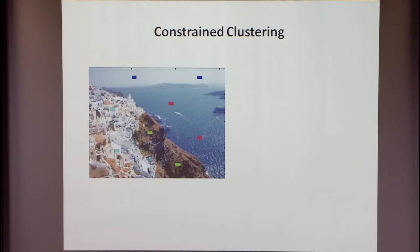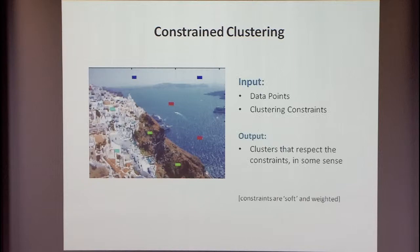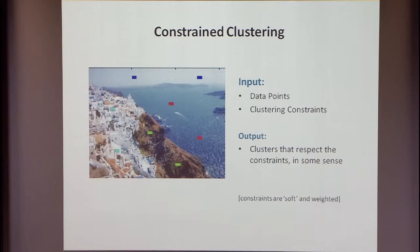I'm not sure if that was the story for this particular work, but here's the problem that Sanjay presented to us from data mining. It's called constrained clustering. There have been a number of papers in data mining, including spectral papers, that try to solve this problem. You have input data points — for example, an image where data points are pixels. You have some clustering constraints: these blue pixels have to be in the same cluster, the red ones too, but pixels colored differently should not be in the same cluster. The desired output is clusters that respect the constraints in some sense.